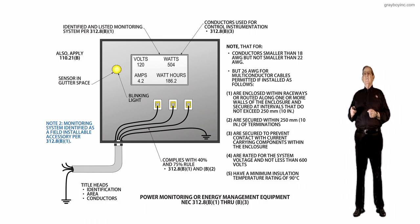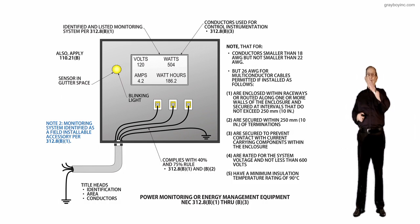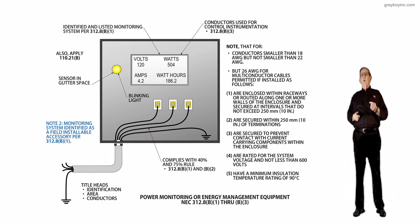Then notice the arrow to the right of the top illustration. It says conductors used for control instrumentation, 312.8 B as in BOI 3.